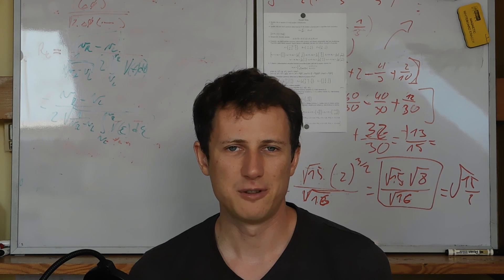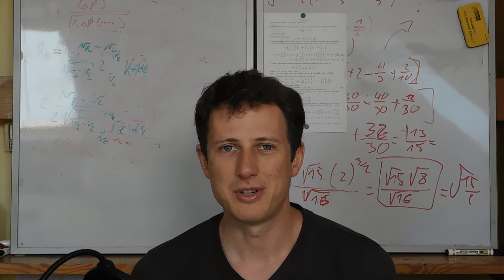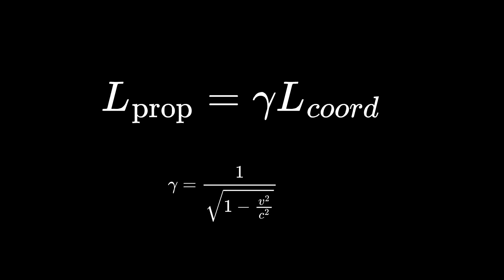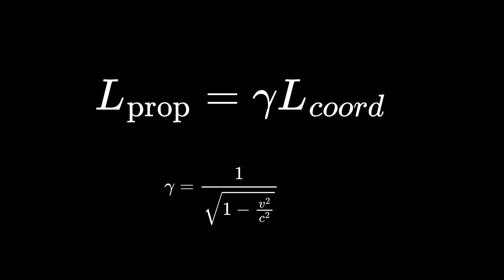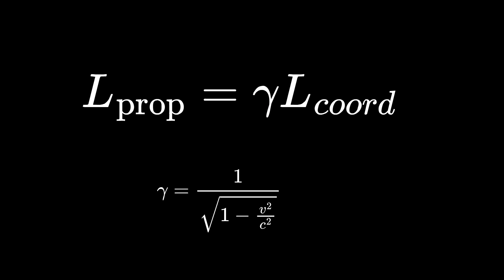After all, you don't have to worry that you are losing information about the world around you just because you can't measure the length of the object directly. All you have to do to get the proper length is to multiply it by the gamma factor, which depends on the velocity.